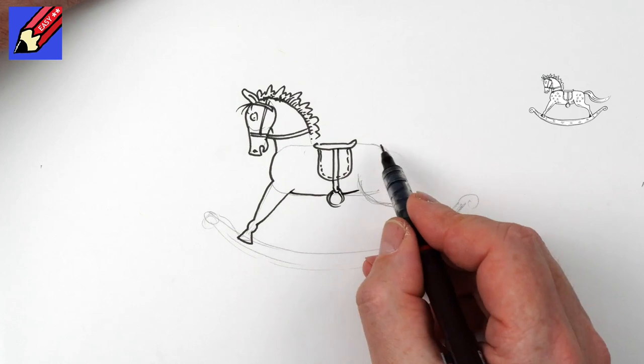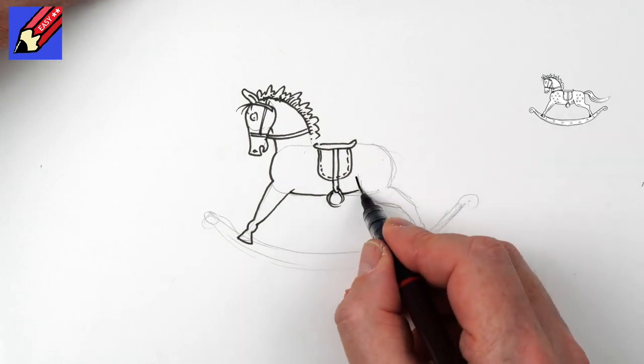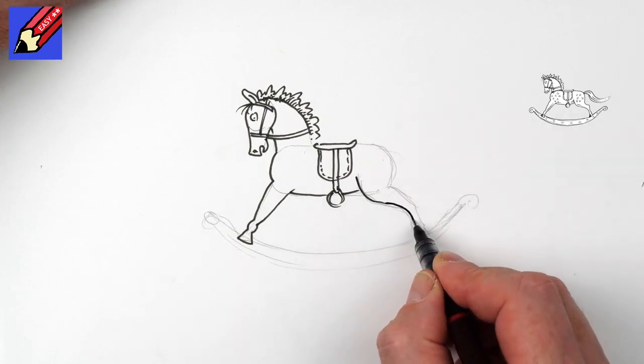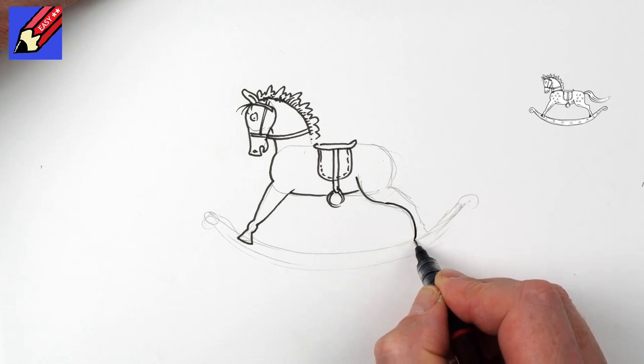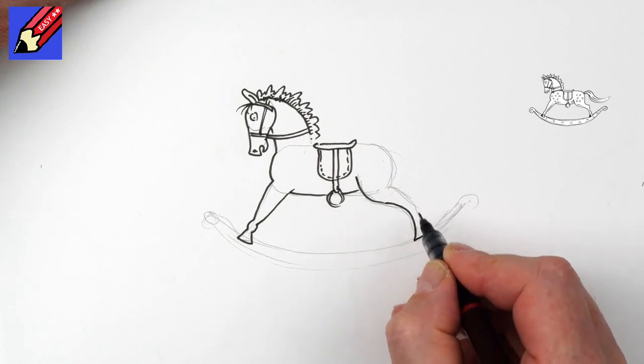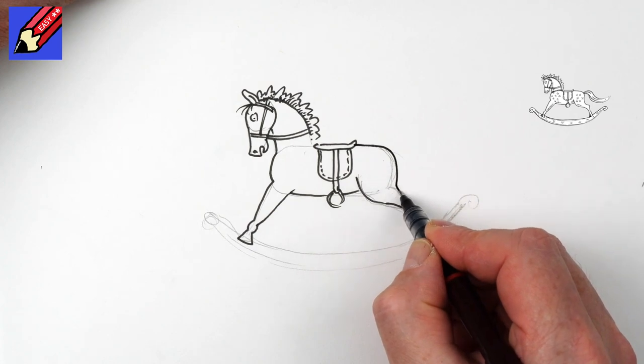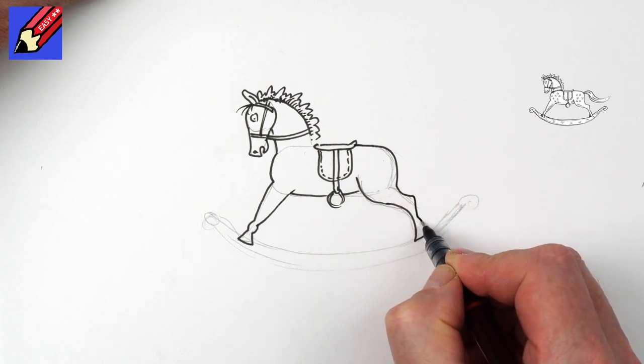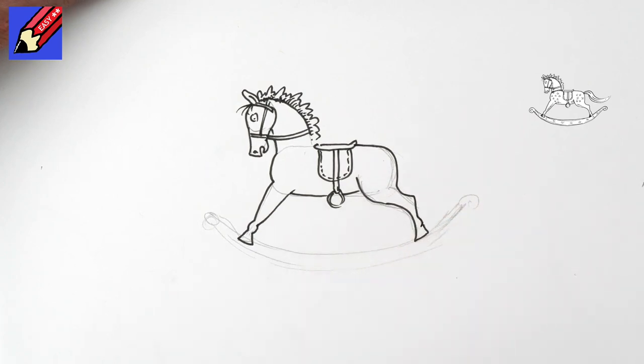The stomach will come around there, and we can draw this sort of S-shape in there. And that will be the hoof. And then we can bring the rump around there like that, and in there like that.